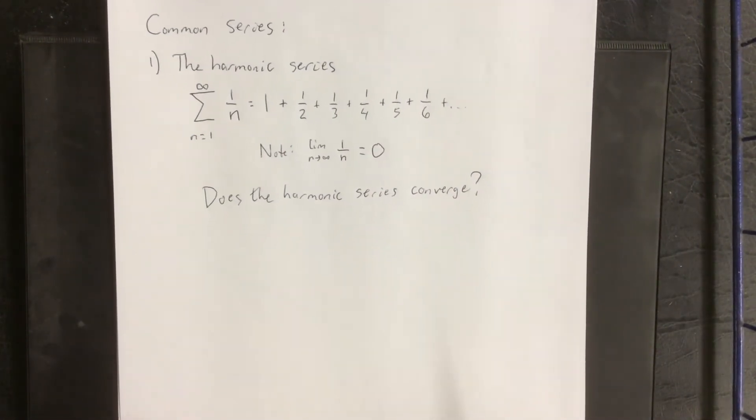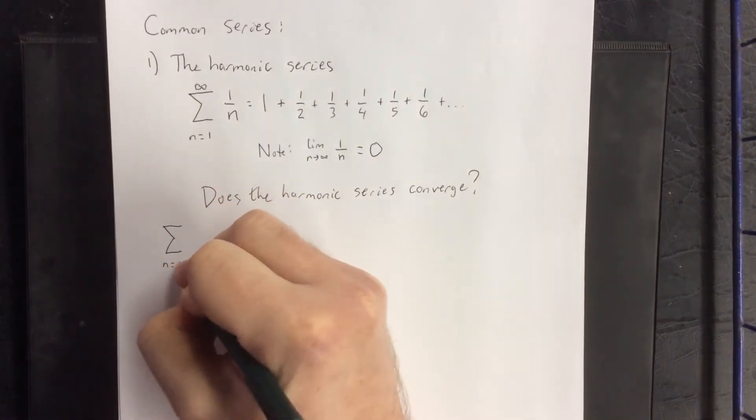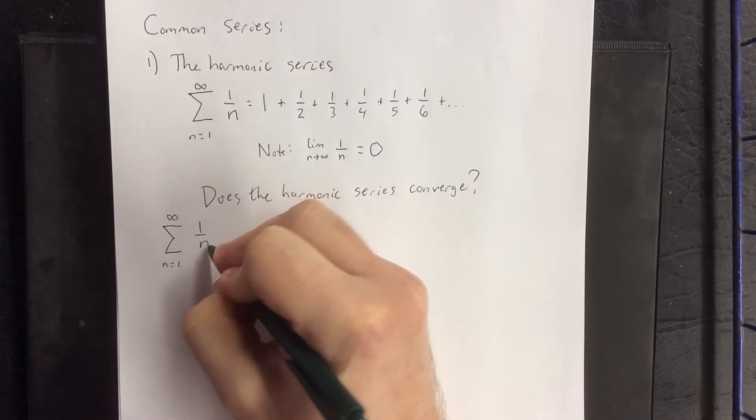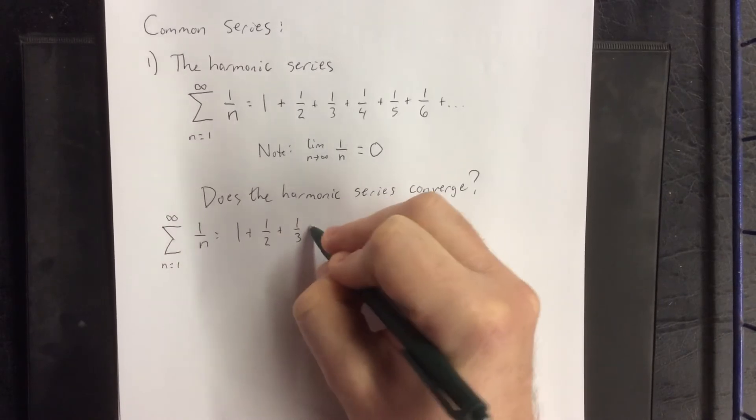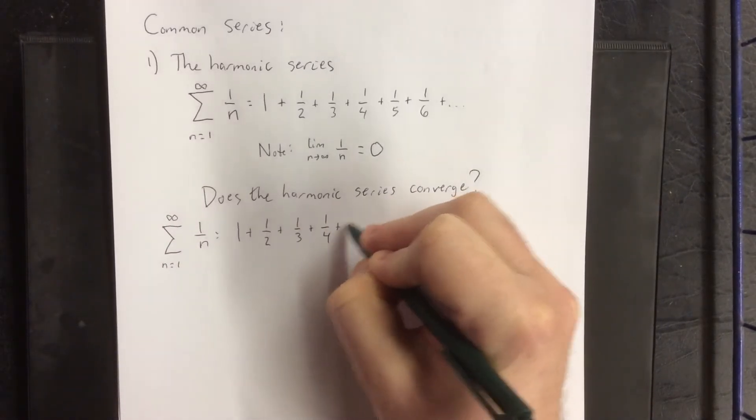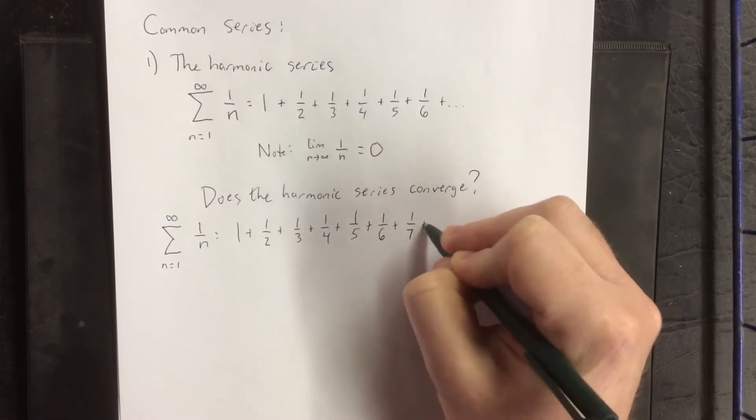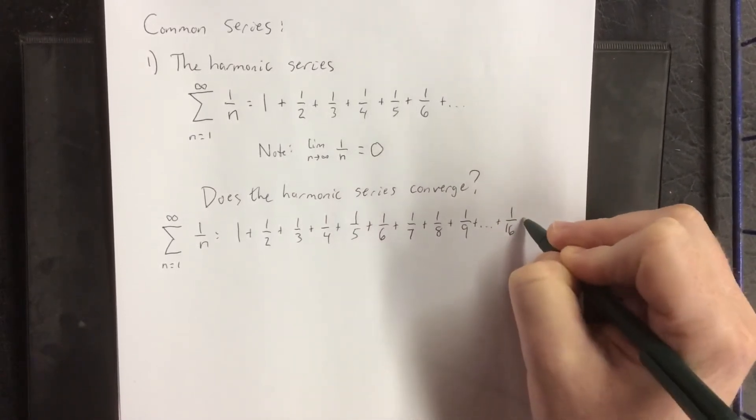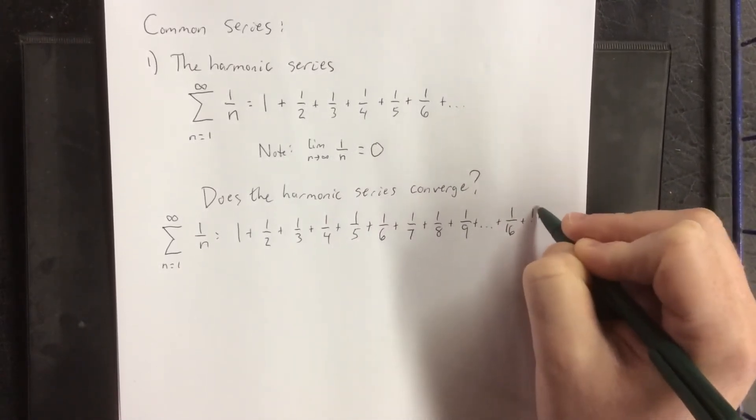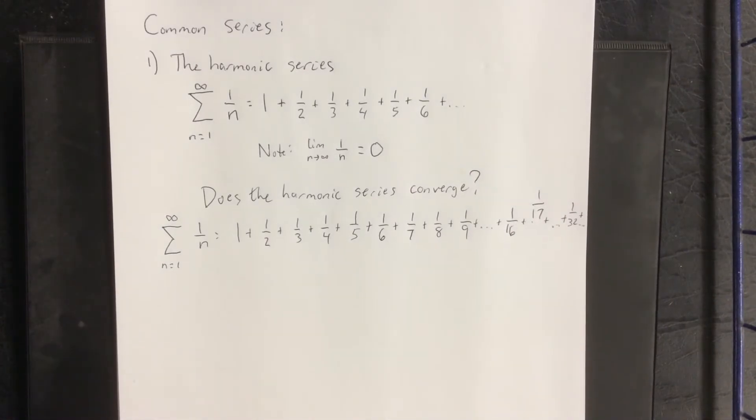So we'll pose the question: does the harmonic series converge? What I'm going to do is go through a sequence of algebraic manipulations to this series. We call it 1 plus 1 half plus 1 third plus 1 fourth plus 1 fifth, 1 sixth, 1 seventh, 1 eighth, 1 ninth, then we're going to skip a few all the way to 1 over 32, and we're about to make some calculations.